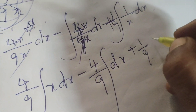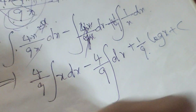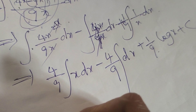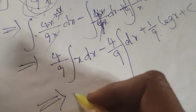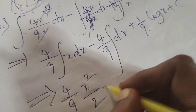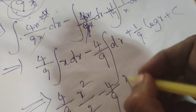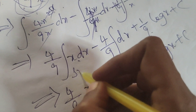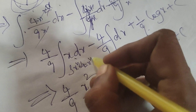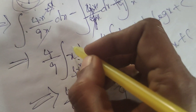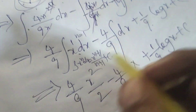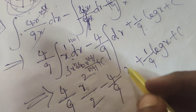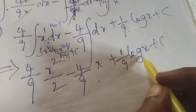Integrating: 4 by 9 times integral of x dx gives x squared by 2, minus 4 by 9 times integral of dx gives x, plus 1 by 9 times integral of 1 by x dx gives log x. Using the formula x power n dx equals x power n plus 1 by n plus 1, here n equals 1 so we get x squared by 2.